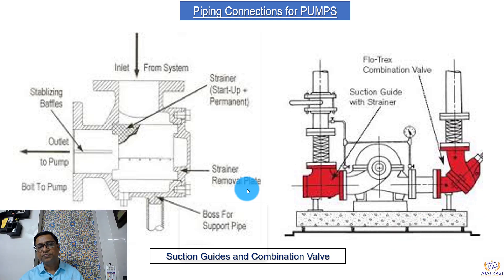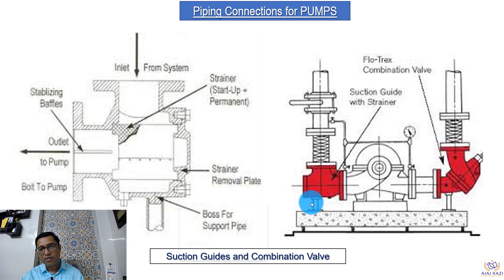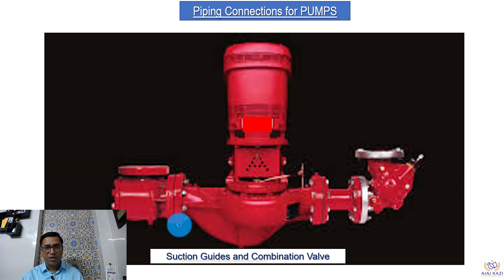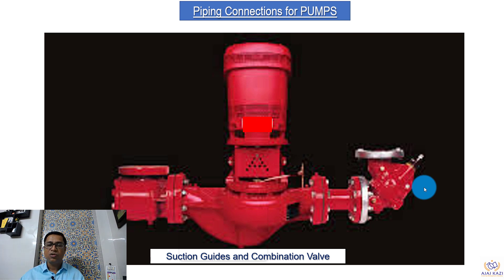One more thing coming now is that Y-strainers and NRVs are getting combined. We now have a suction guide instead of a Y-strainer, which is directly connected to the pump, and we have a combination valve which acts as an NRV plus isolation valve. This is the new development coming in — the suction guide and the combination valve. This saves a lot of joints in the piping because two things are replaced by one, and secondly the space requirement is really reduced. So this is the advantage.